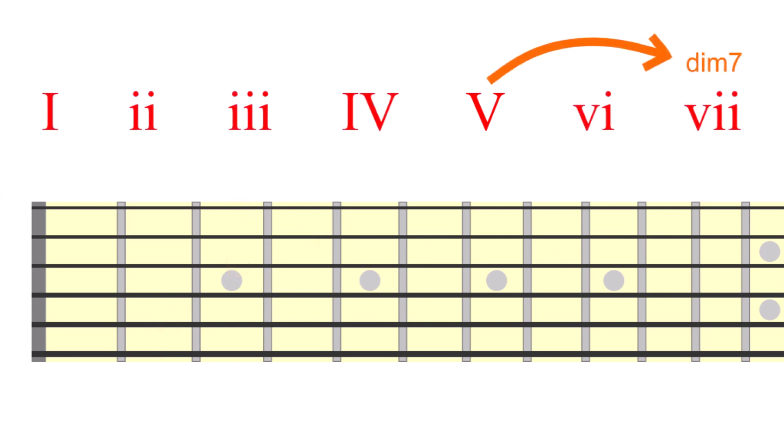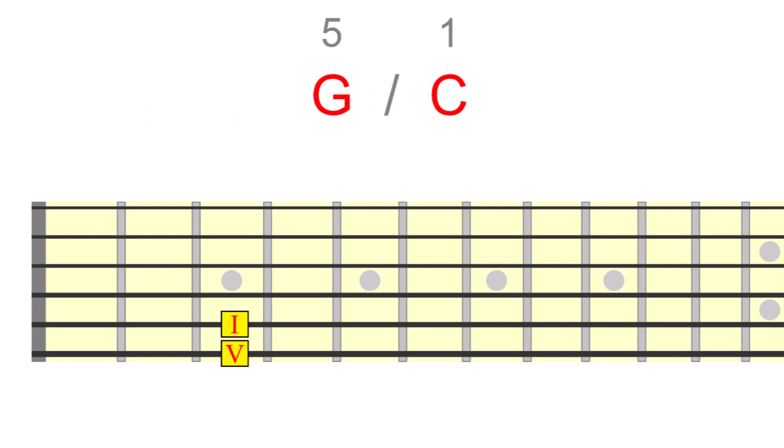The diminished 7th chord can also work as a dominant substitute, in both major and minor keys. Take the relationship between 5 and 1 in C major. We could replace that G5 chord with a diminished 7th chord built on the 7 position. That's simply one fret down from the tonic root. Therefore, in C major, B diminished 7 would be our dominant substitute.